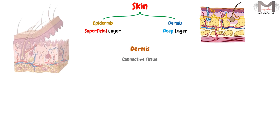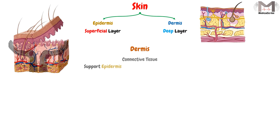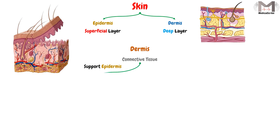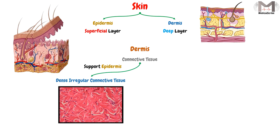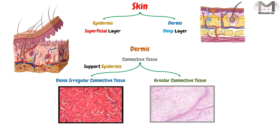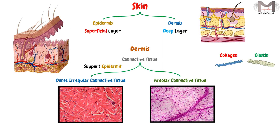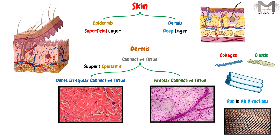The dermis layer is a connective tissue that mainly works to support the epidermis layer. This layer consists of dense regular connective tissue and irregular connective tissue, represented mainly by the existence of collagen and elastin fibers. These collagen and elastin fibers are arranged as bundles, and these bundles run in all directions, so they interlace, making a woven or tissue-like pattern.